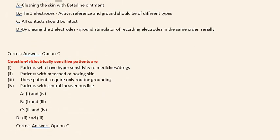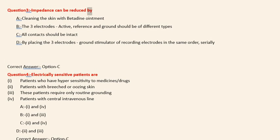Question 3: Impedance can be reduced by: A. Cleaning the skin with betadine ointment. B. The three electrodes - active, reference and ground - should be of different types. C. All contacts should be intact. D. By placing the three electrodes - ground stimulator of recording electrodes - in the same order, serially. Correct answer: Option C.